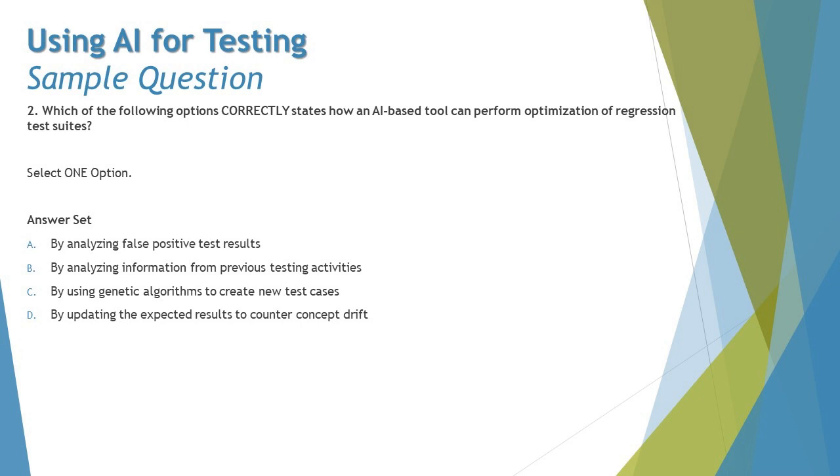Looking at option D, by updating the expected results to counter concept drift. Concept drift is important to consider in regression testing, however what we have covered is that concept drift is not related to regression test optimization using AI. Currently we have to stick to the content which we have discussed. At this point of time, we have no idea that concept drift and regression testing can be addressed by AI. Currently AI is only being seen to support regression testing from the perspective of optimizing it in terms of prioritizing size, etc.